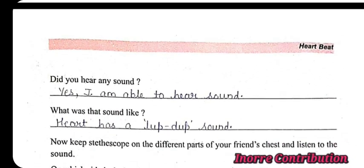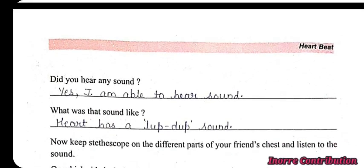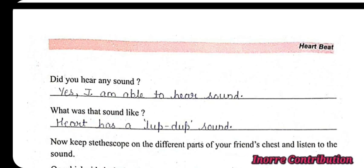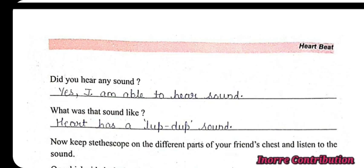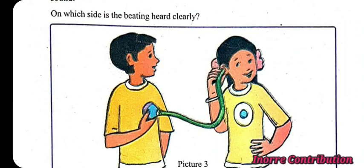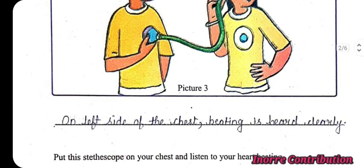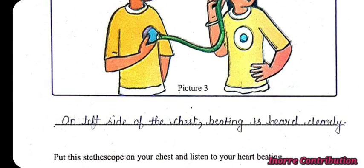Did you hear any sound? Yes, I am able to hear sound. What was that sound like? The heart has a lub-dub sound. On which side is the beating heard clearly? The answer is: on the left side of the chest, the beating is heard clearly.